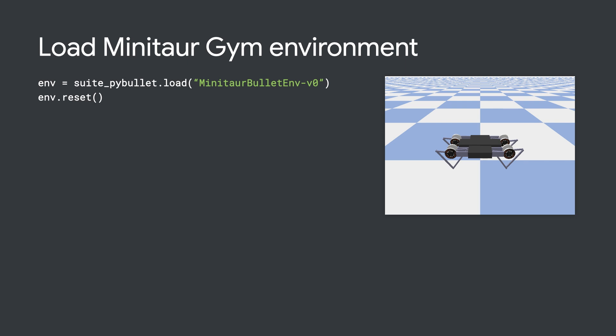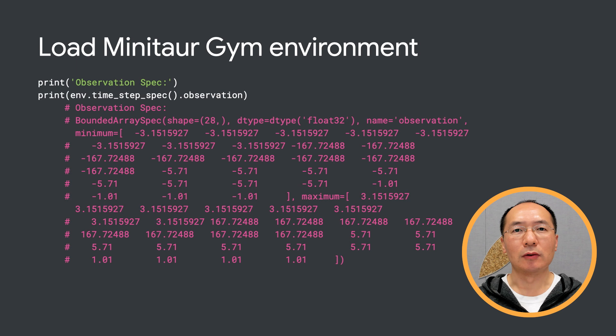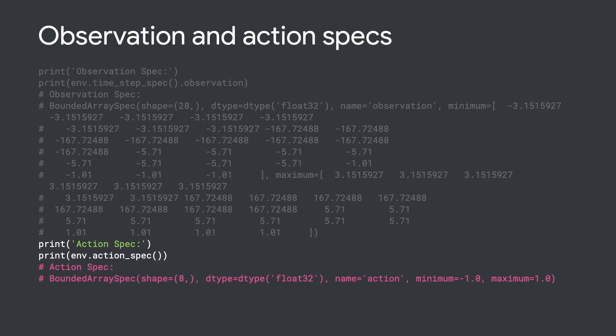Now let's start by importing the Minitaur environment. Minitaur is a PyBullet environment, so let's import it first. We can see the environment's observation and action specs. The observation is fairly complex — we receive 28 values representing the angles, velocities, and torques for all the motors. In return, the environment expects 8 values for the actions between negative 1 and 1. These are the motor angles.